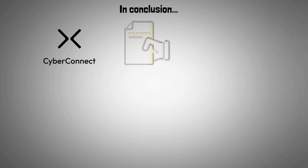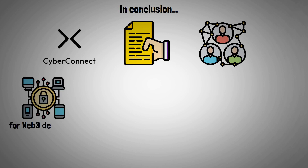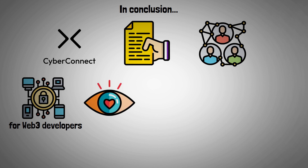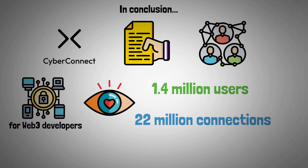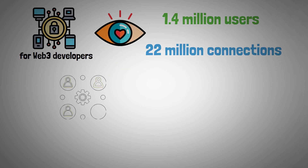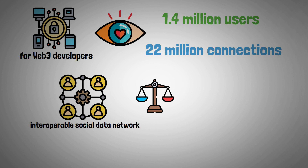CyberConnect gives users back control of their social graph data, while also providing an infrastructure that all Web3 developers can use and expand upon. Its protocol has already attracted over 1.4 million registered users and 22 million connections. CyberConnect aims to create an interoperable social data network across blockchains, contrasting with centralized platforms like Facebook.